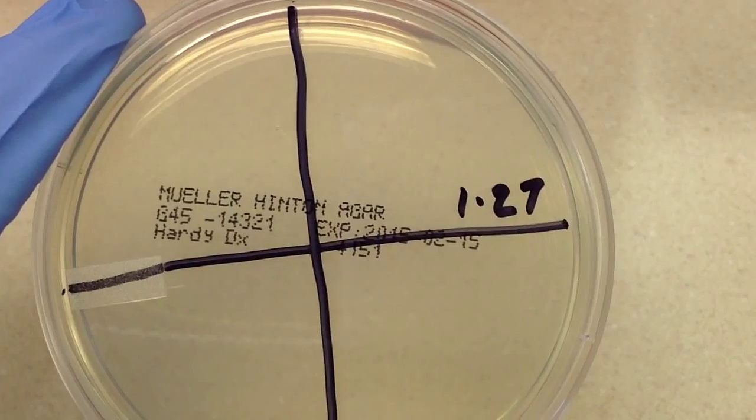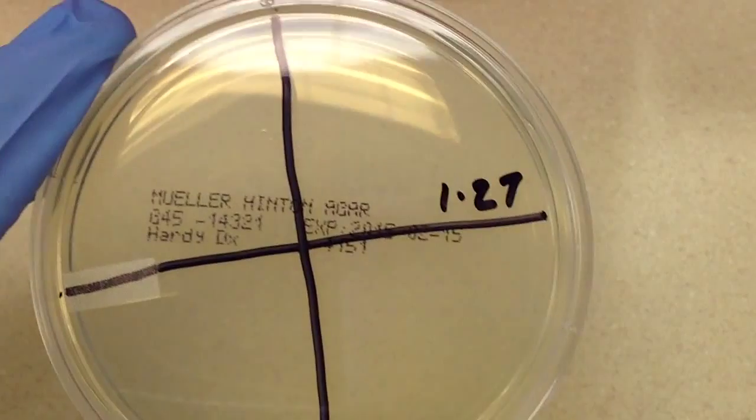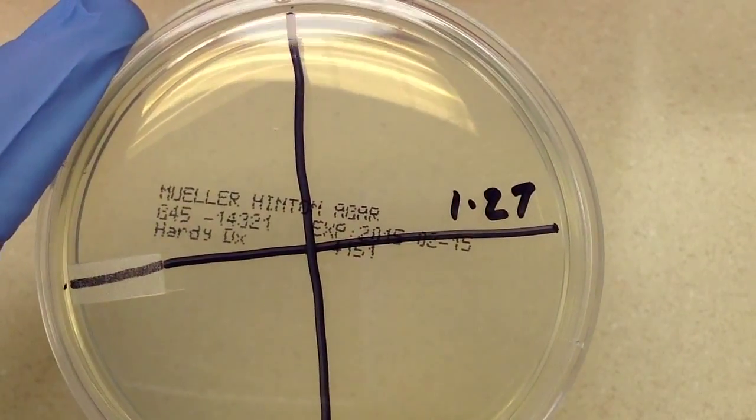I've divided it into four different quadrants. And what's going to happen is I'm going to put a disc in each of these sections except one. One we're going to leave blank.